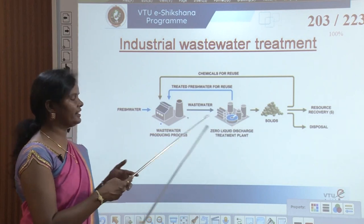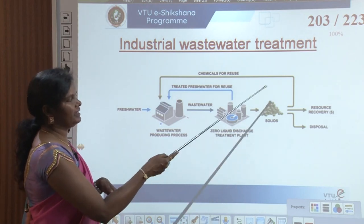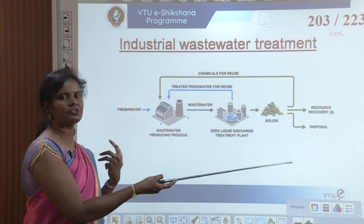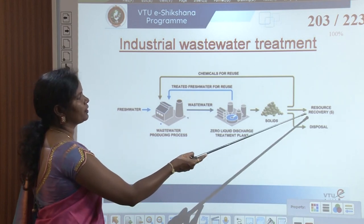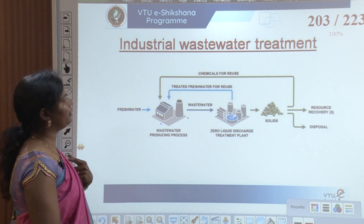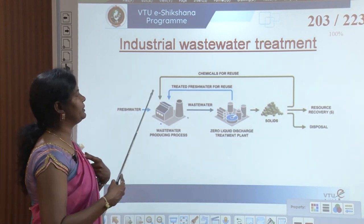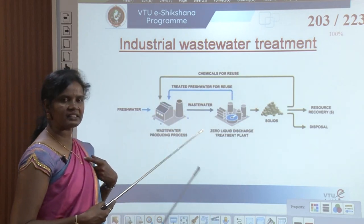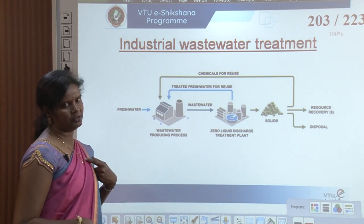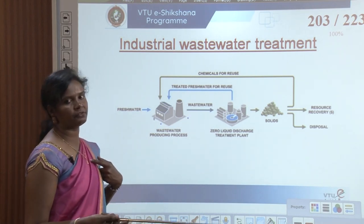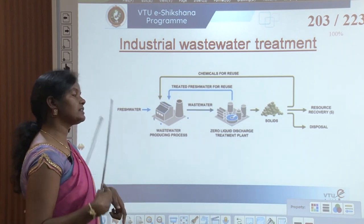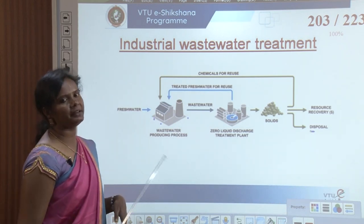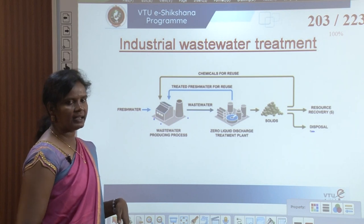Wastewater is cleared in the plant; only solids are separated. Some solids with no use are disposed of, some undergo resource recovery, and some are reused. Solid matter and chemicals can be reused in the industries after segregation. With this approach, almost zero discharge can be maintained if all industries adopt this intention.